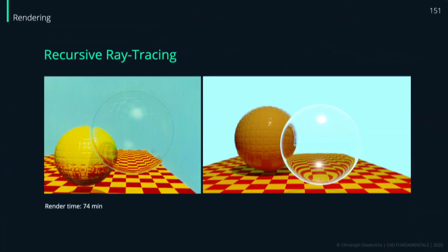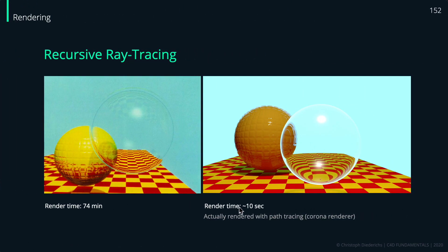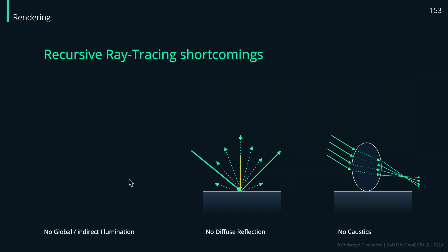I rebuilt the scene in Corona Renderer to compare render times. Back in the late 1970s this took about 74 minutes, and now in Corona it took about 10 seconds to get a noise-free result. However, Corona doesn't use recursive ray tracing — it uses another approach called path tracing.